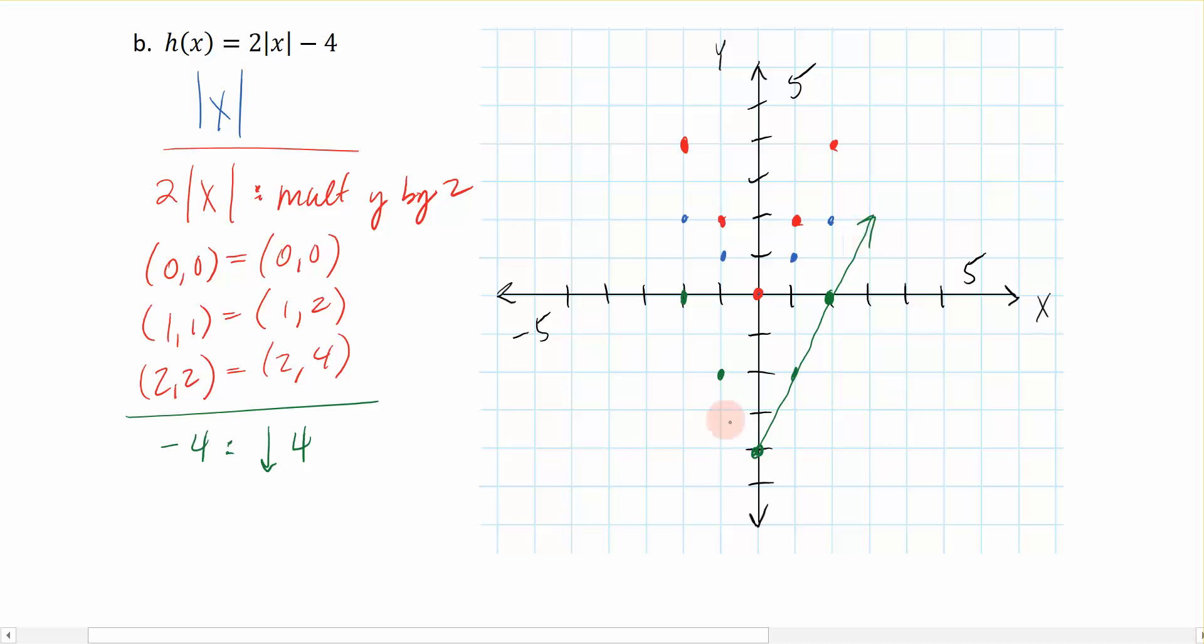Now it goes on forever. I only chose those certain dots to graph, but it does go on forever. This is the graph of, this green graph is the graph of 2 times the absolute value of x minus 4.